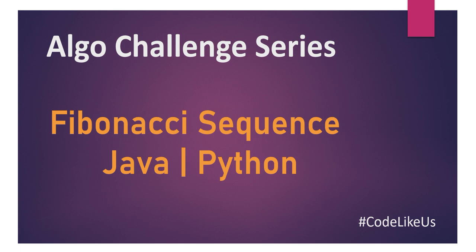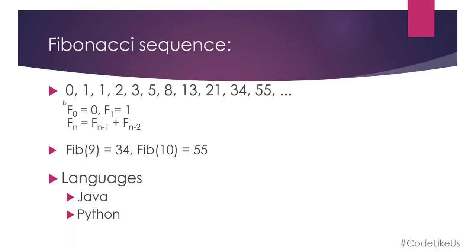As per today's topic, we chose the Fibonacci sequence, which is a very popular sequence in coding. We'll look at how we can achieve that sequence development using Java and Python in various methods. The Fibonacci sequence is: 0, 1, 1, 2, 3, and so on. The 0th element is 0, the first element is 1, then you add adjacent two values to get the next element. So 0+1=1, 1+1=2, 1+2=3, and so on. The 9th element is 34 and the 10th element is 55.